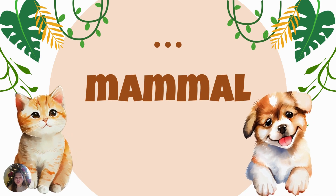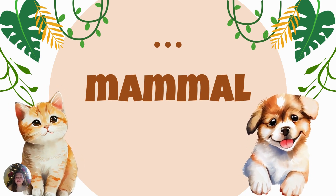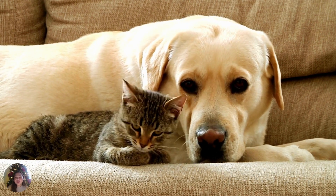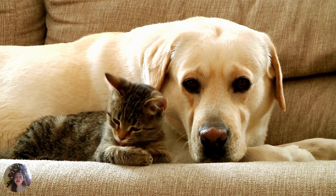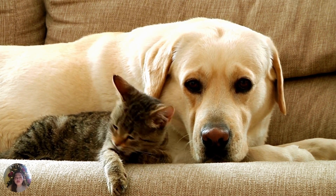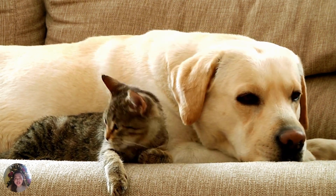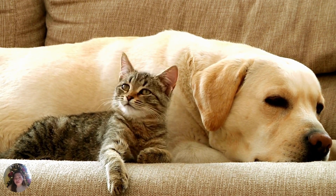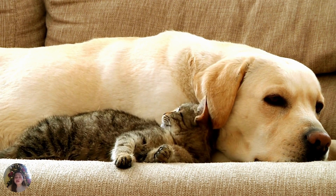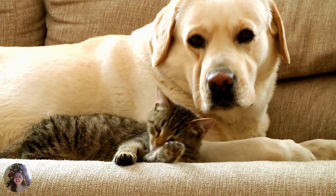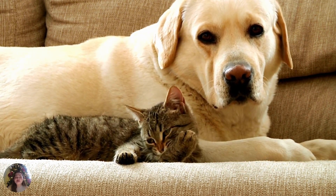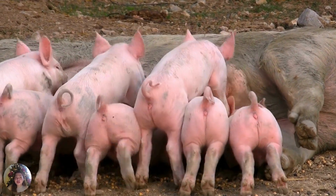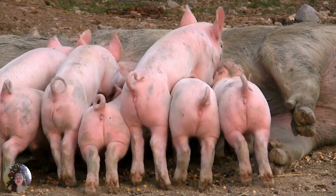Let us now study the mammals. Cats and dogs belong to the group of animals called mammals. The bodies of most mammals are covered with hair or fur, just like dogs and cats. They have muscular bodies. Most mammals have two pairs of legs, either for walking or for running. Young mammals are fed by their mothers with milk from their breasts.